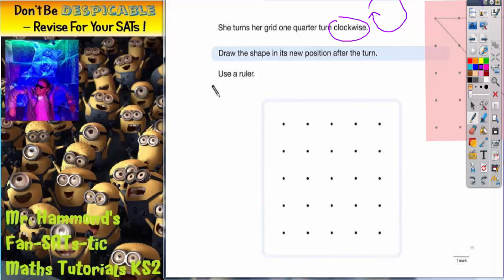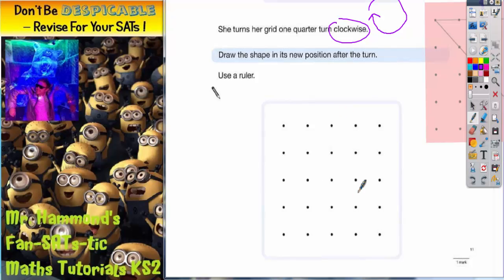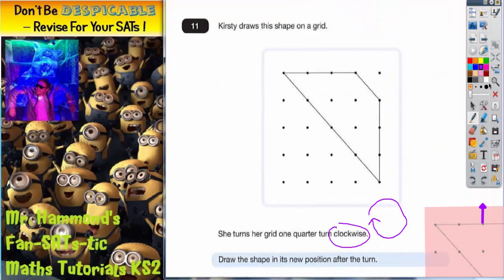It then says draw the shape in its new position after the turn, use a ruler, and we're going to have to draw the shape on this grid. Now the easiest thing to do here is to get some tracing paper to help us.